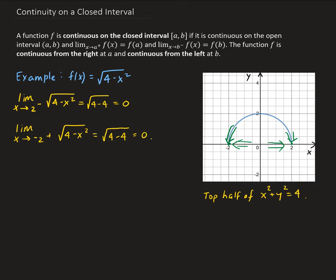Now let's check the function values at 2 and negative 2. The function value at 2 is going to be 0, and the function value at negative 2 is also going to be 0.